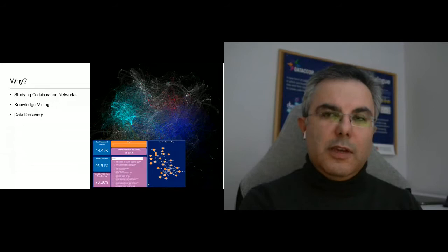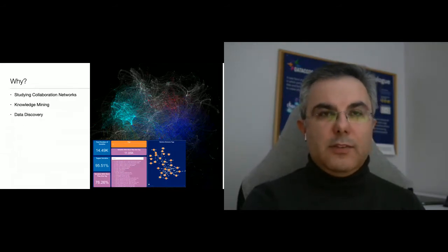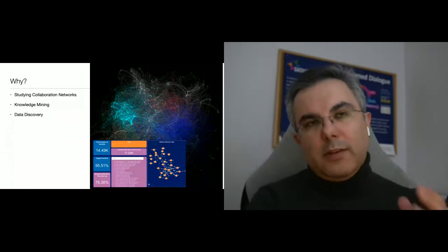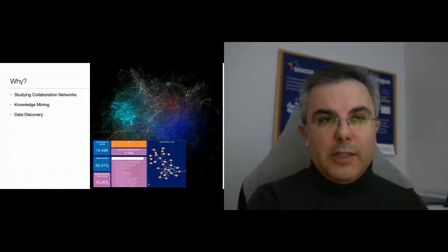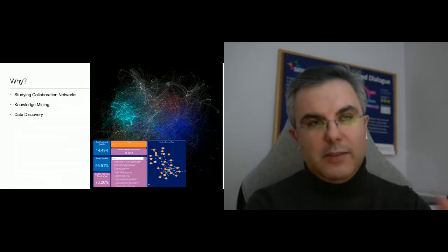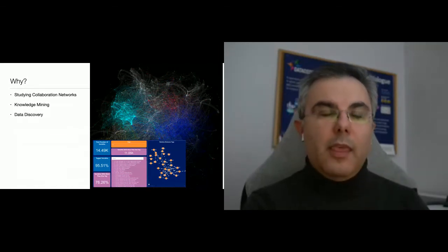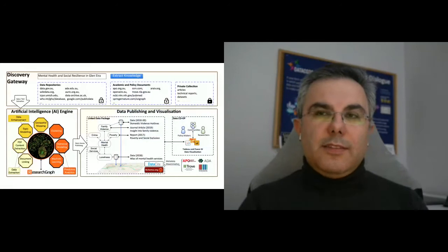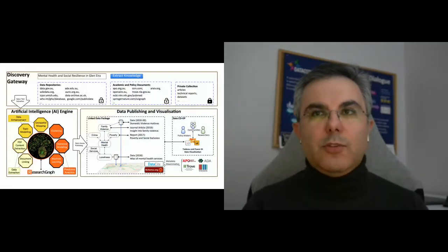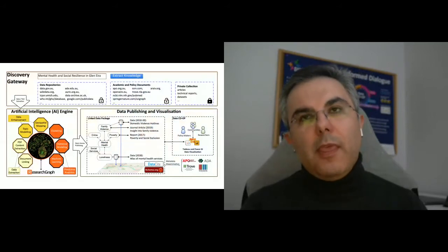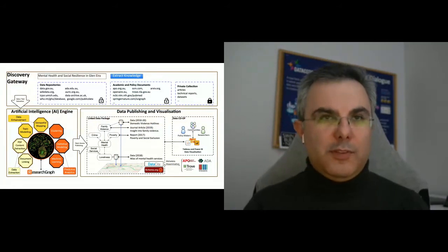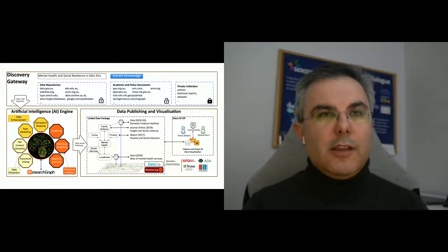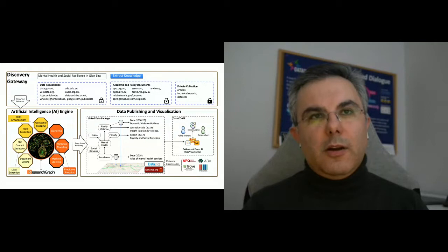A big portion is what we call the Open Research Graph — closest to the KID graph conceptualization — which is all connections between identifiers: researchers, research datasets, organizations, grants, and publications. When we started building these graphs back in 2016–17, publications meant academic articles, but now we have gray literature, technical reports, social media content, and traditional media records. We operate three main use cases: studying collaboration networks, knowledge mining by reading PDF content, and data discovery.